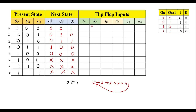Now let me write the flip-flop inputs using the JK excitation table. Considering QC and QC-next: when it is 0→0, it is 0 X; when it is 0→1, it is 1 X; when it is 1→0, that is X 1. The remaining don't-care states give X X for JC and KC inputs.